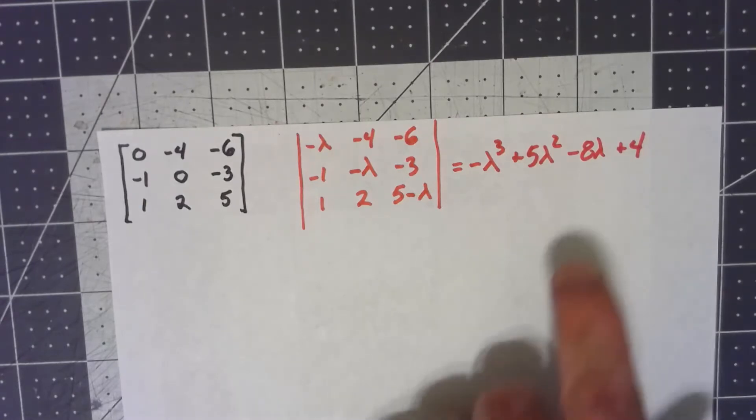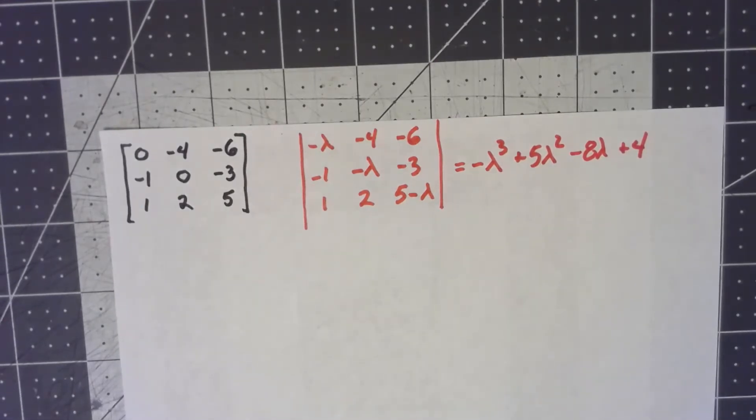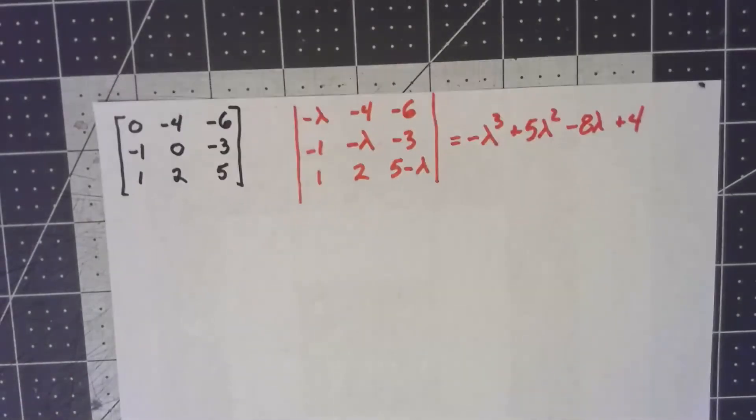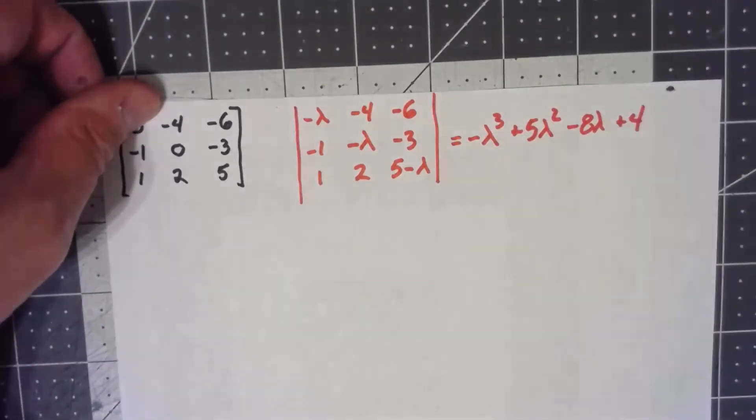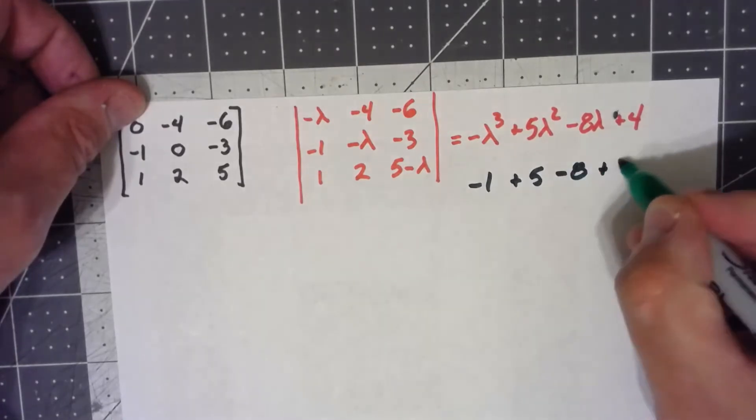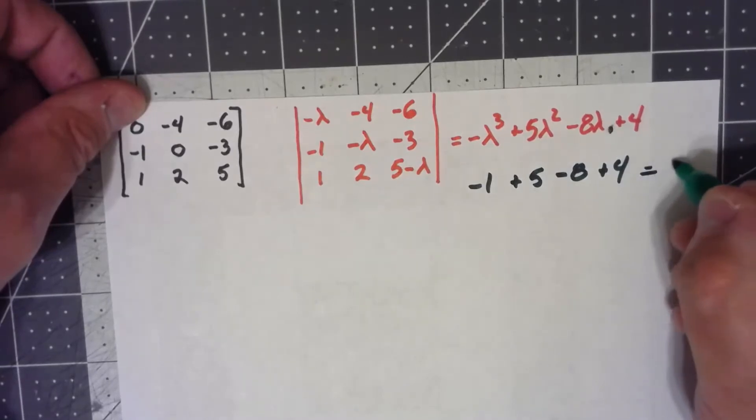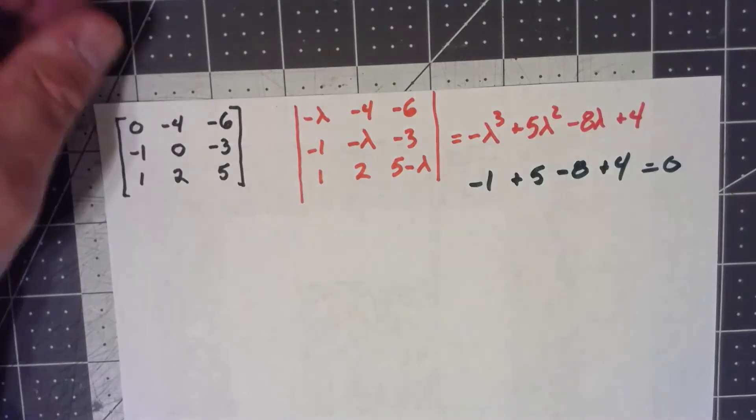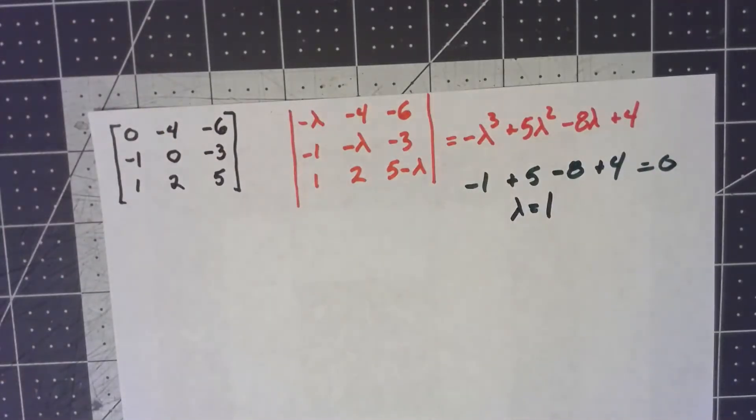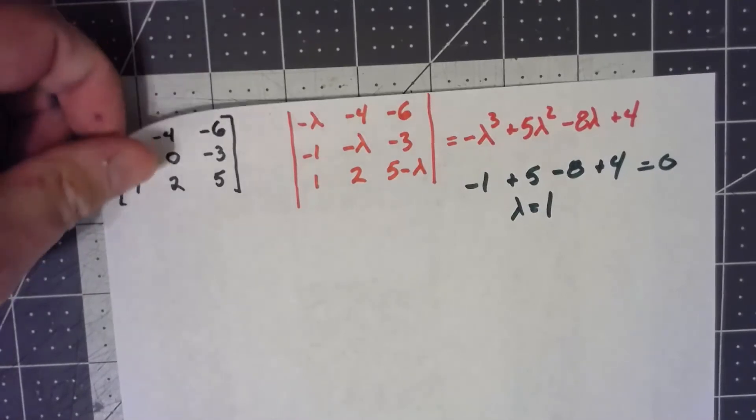Okay, so we've got to find the zeros of this polynomial, and we know that if they're nice, then they're going to be a factor of four over a factor of one, plus or minus that. So I'm just going to start plugging stuff in, starting with the easiest one. The easiest number to plug in there would be one. That would give me negative one plus five minus eight plus four. Oh hey, positive nine minus nine gives me zero. And there we go, so one is an eigenvalue.